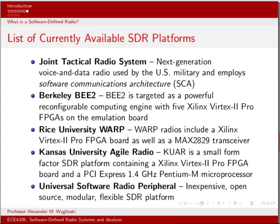Nowadays there are numerous SDR options to choose from. The Joint Tactical Radio System, or JTRS, is a military SDR program supported by the United States military with numerous companies working on it, aiming to eventually enable SDR use by most U.S. military forces. The next three platforms — the Berkeley B2, the Rice University WARP, and the Kansas University Agile Radio — are all university-focused SDR projects, likely sponsored by external sources such as government, industry, or a consortium.